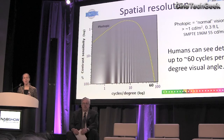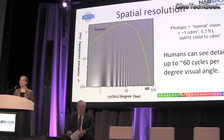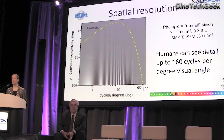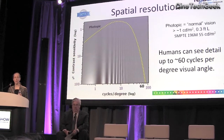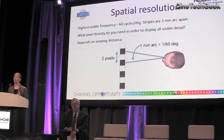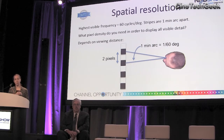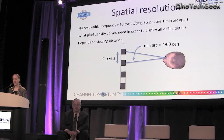If you measure that properly in the lab under brightly lit photopic conditions, you get a curve showing that humans can see detail right up to 60 cycles per degree of visual angle, meaning the stripes are one minute of arc — one sixtieth of one degree — apart. From that information, we can ask what pixel density we need in order to display all visible detail. The answer depends on viewing distance: we want two pixels to subtend one minute of arc.